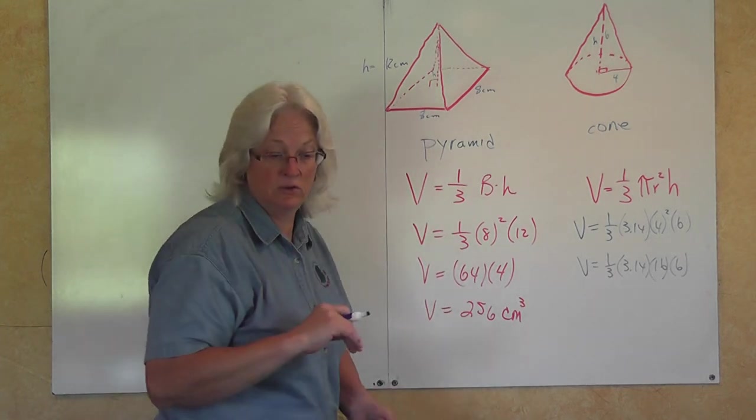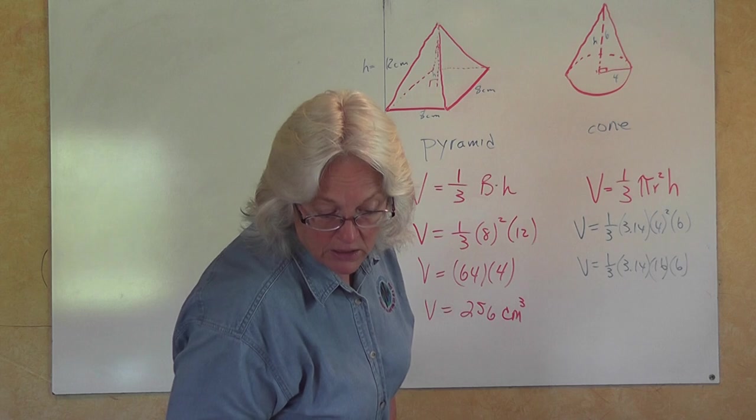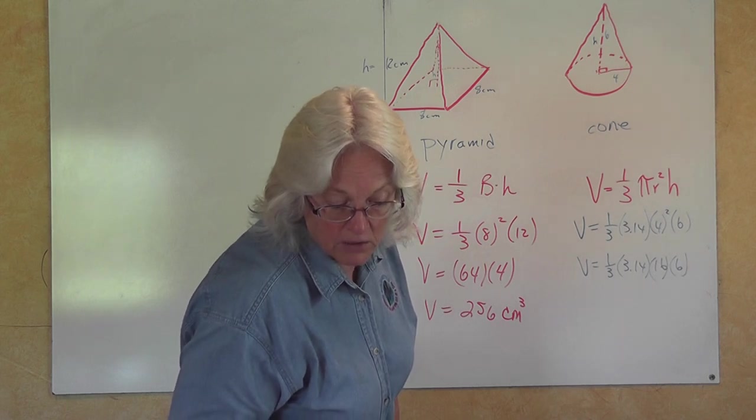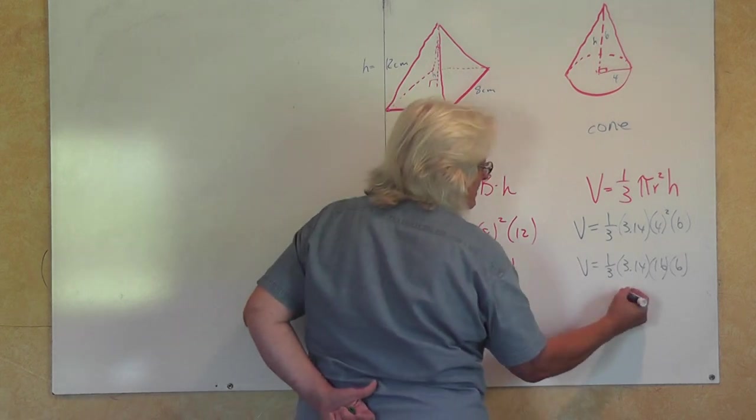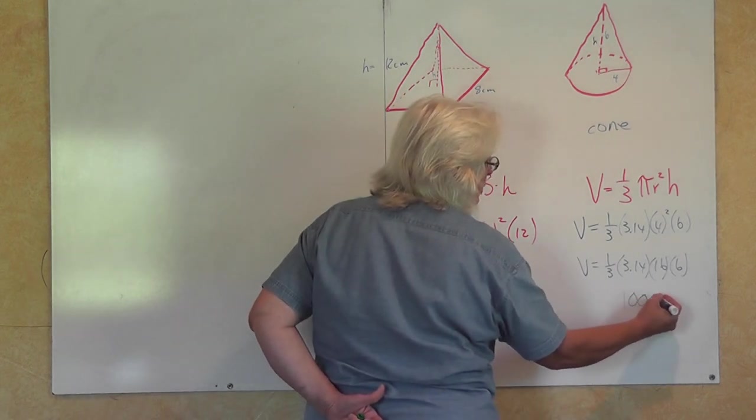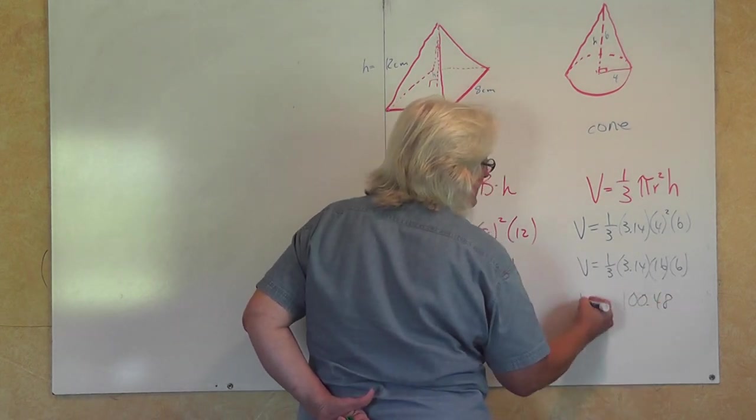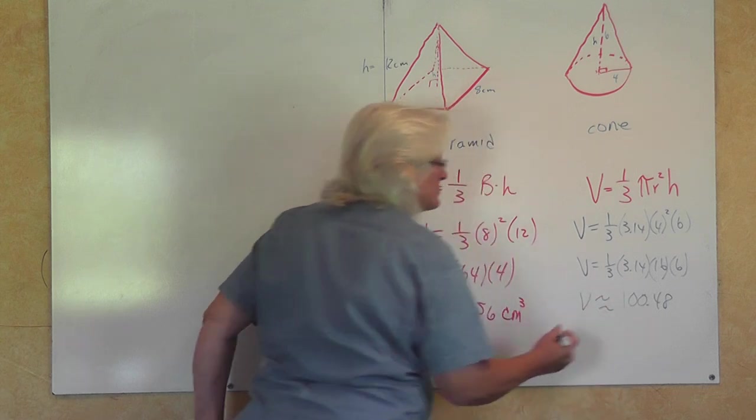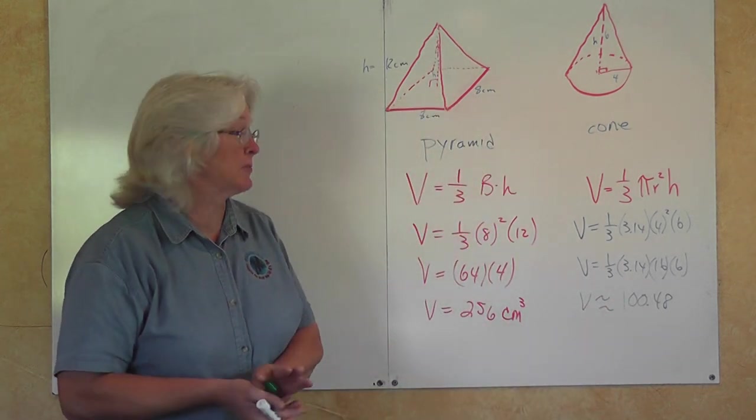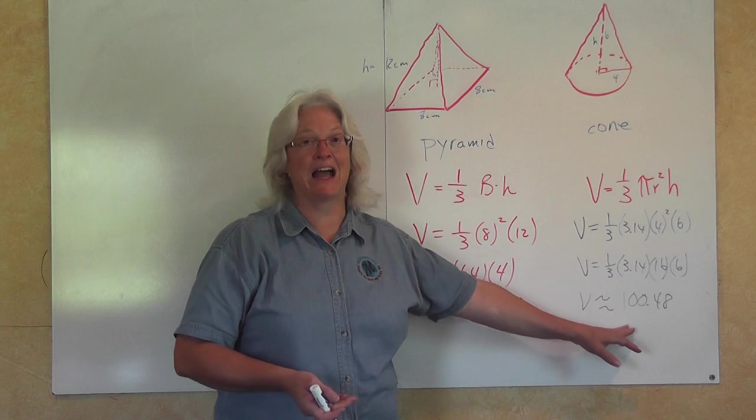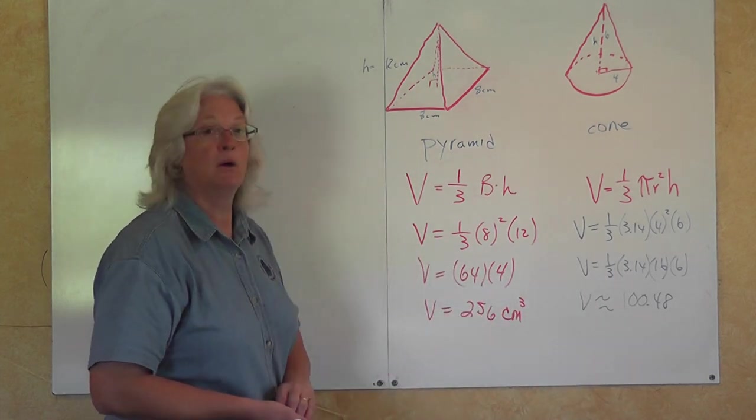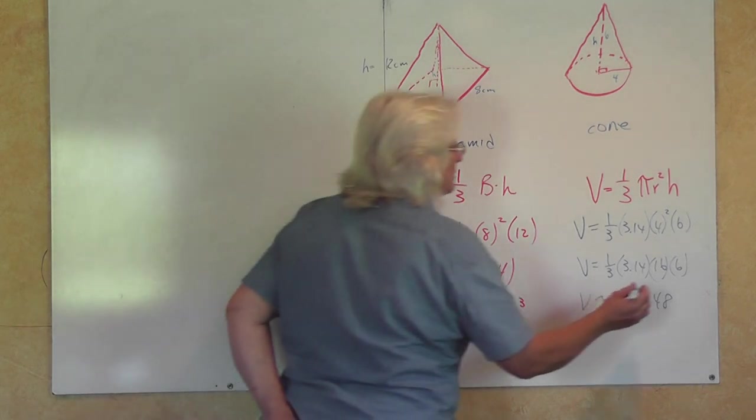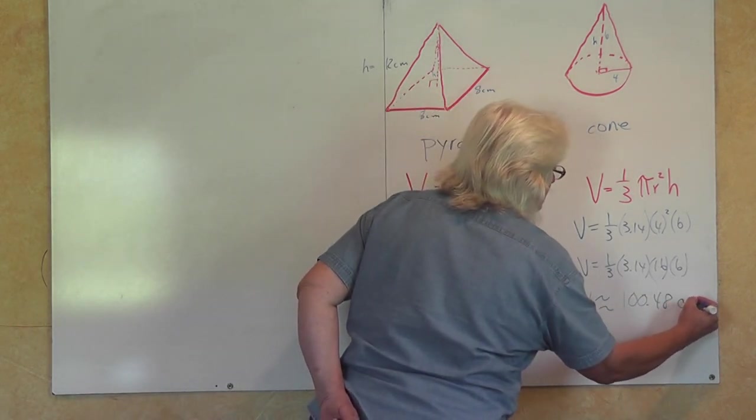Now go ahead and key this into your calculator, and we have 100.48. And because we had to use an approximation for pi, we don't say that the volume is exactly equal to this. We have approximately 100.48 cubic centimeters.